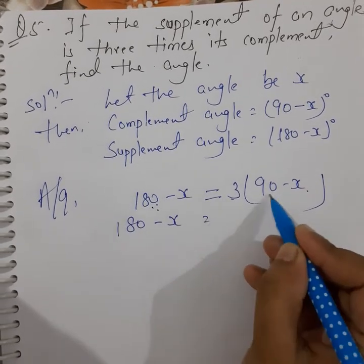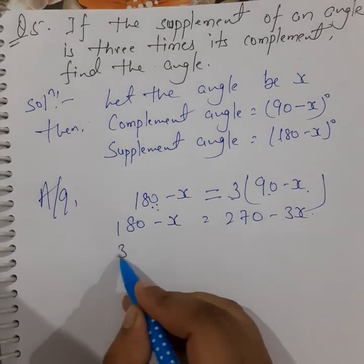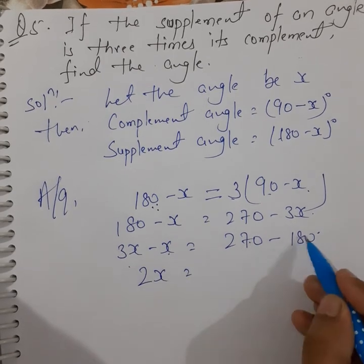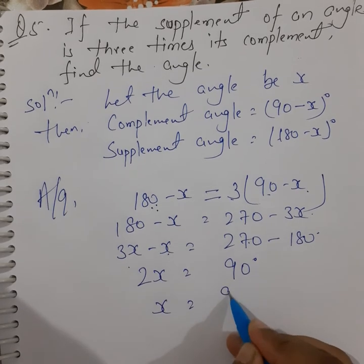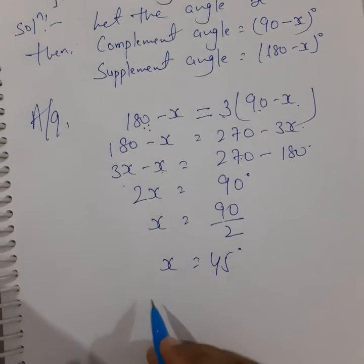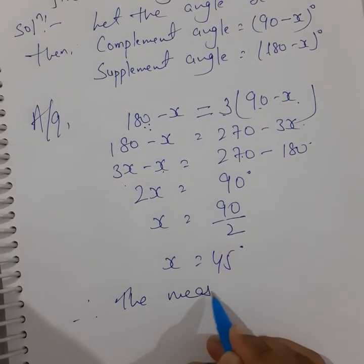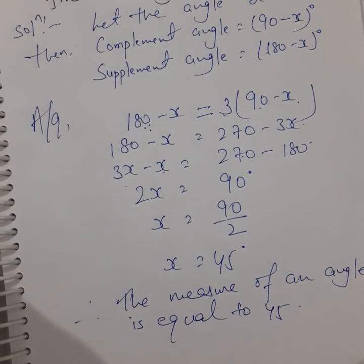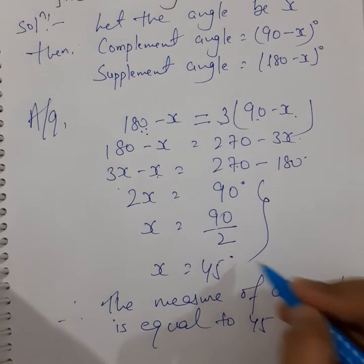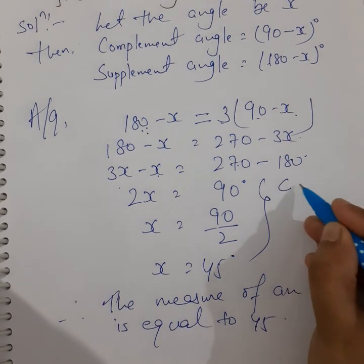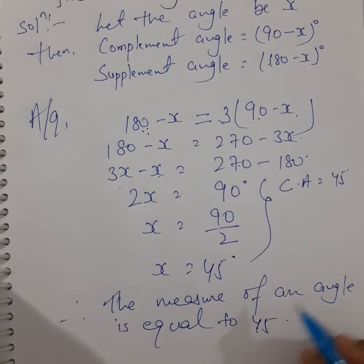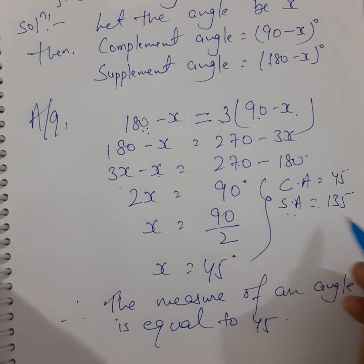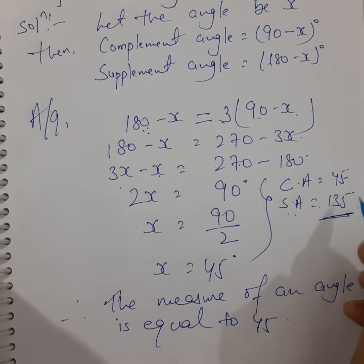Solving: 180 − X = 3(90 − X), so 180 − X = 270 − 3X, giving 3X − X = 270 − 180, so 2X = 90 and X = 45 degrees. We can verify: complement = 90 − 45 = 45, supplement = 180 − 45 = 135 = 3 × 45. Therefore, the measure of the angle is 45 degrees.